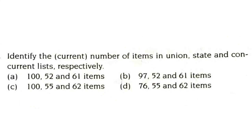Identify the current number of items in the union, state, and concurrent lists respectively. As of now, there are 100 items in the union list, 52 in the state list, and 61 in the concurrent list. So option A — 100, 52, and 61 — is the correct answer.